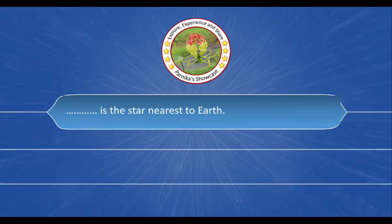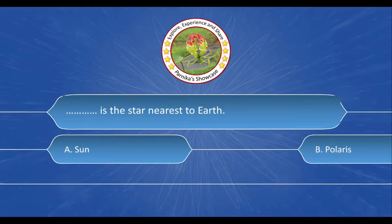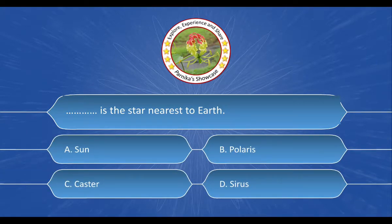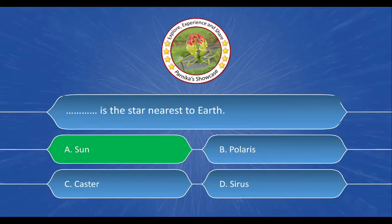Next question: This is the star nearest to the Earth. And the options are: A. Sun, B. Polaris, C. Castor, D. Sirius. And the correct answer is option A. Sun.